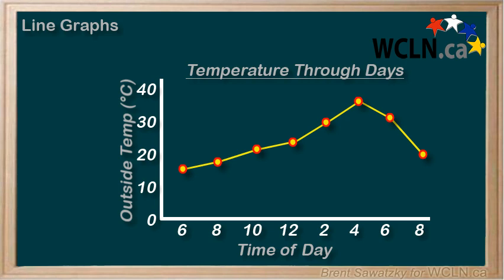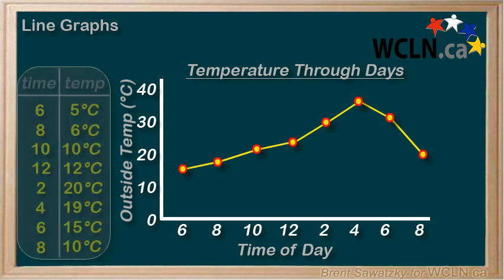What if we are given another set of data for comparison? A table with temperature from a day in November. We can look at this data, but we realize that looking at a table isn't nearly as helpful as making a graph. So let's add this same data to our existing graph, making it a double line graph.